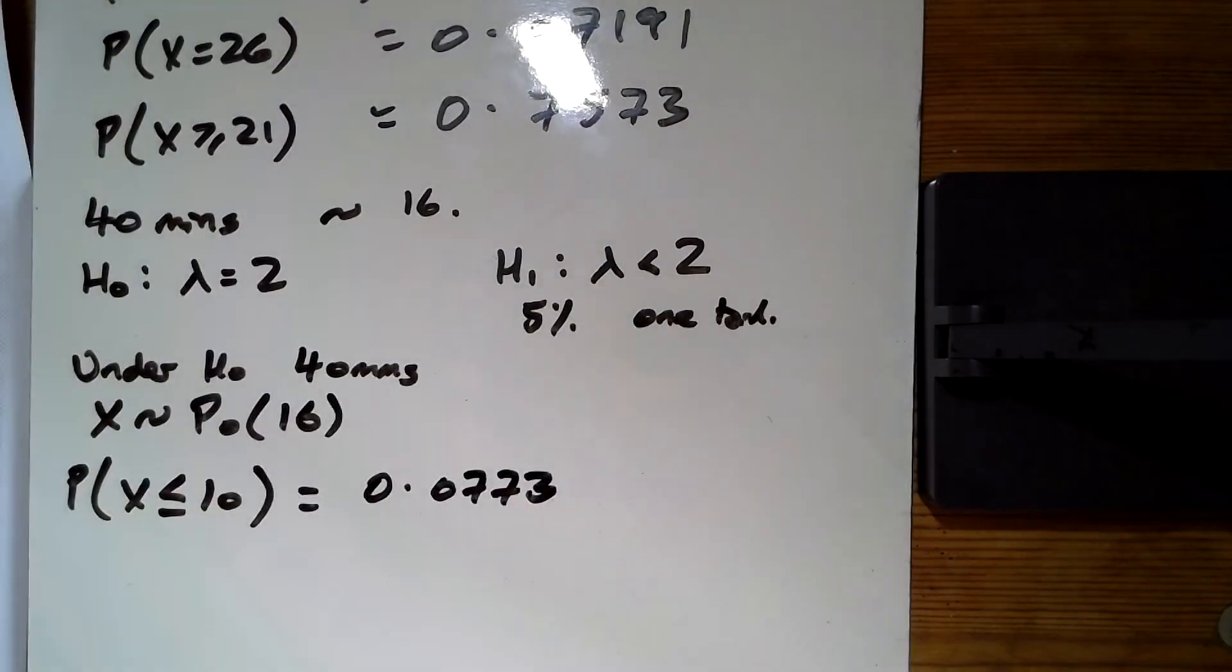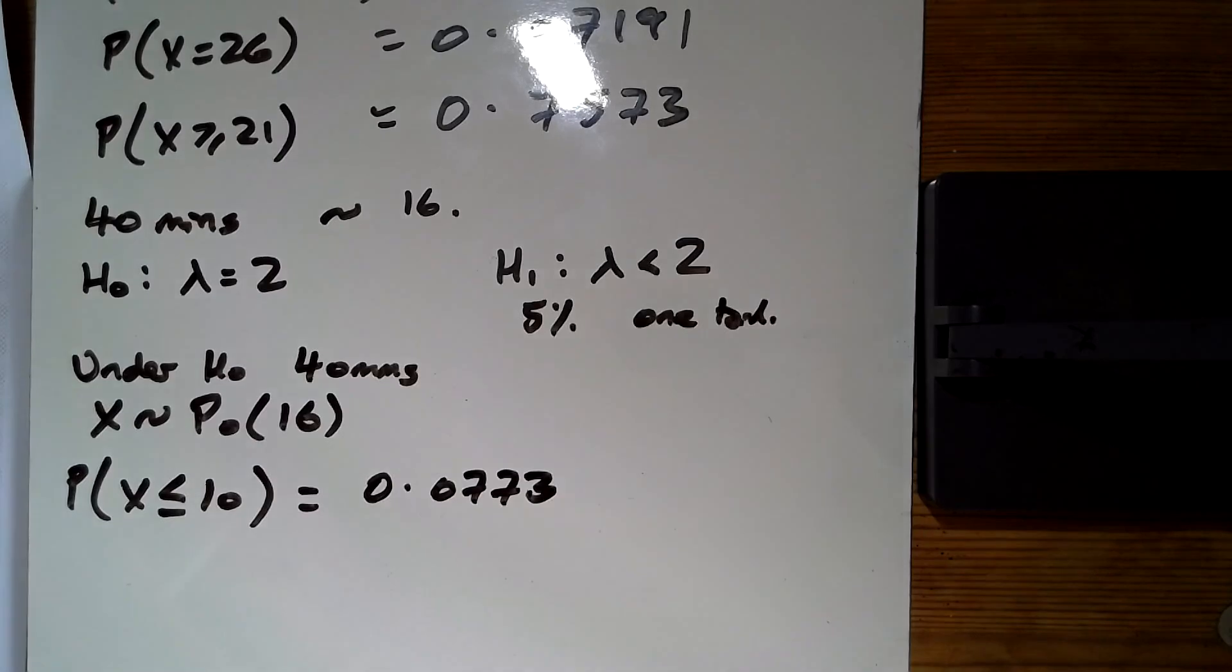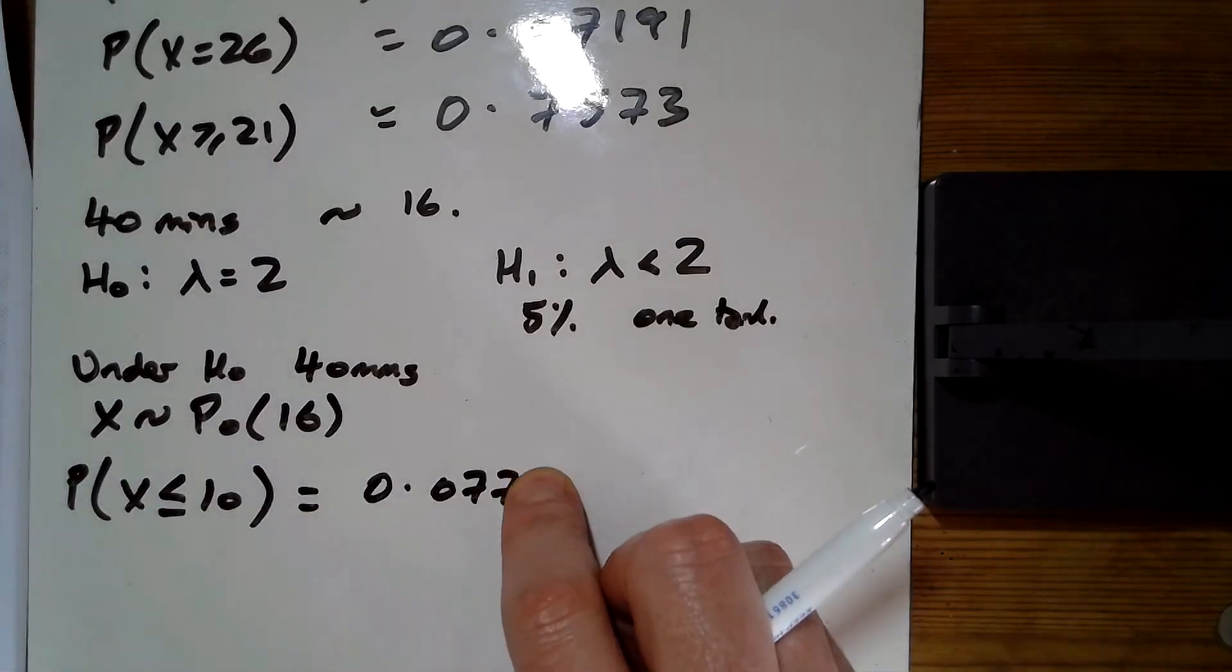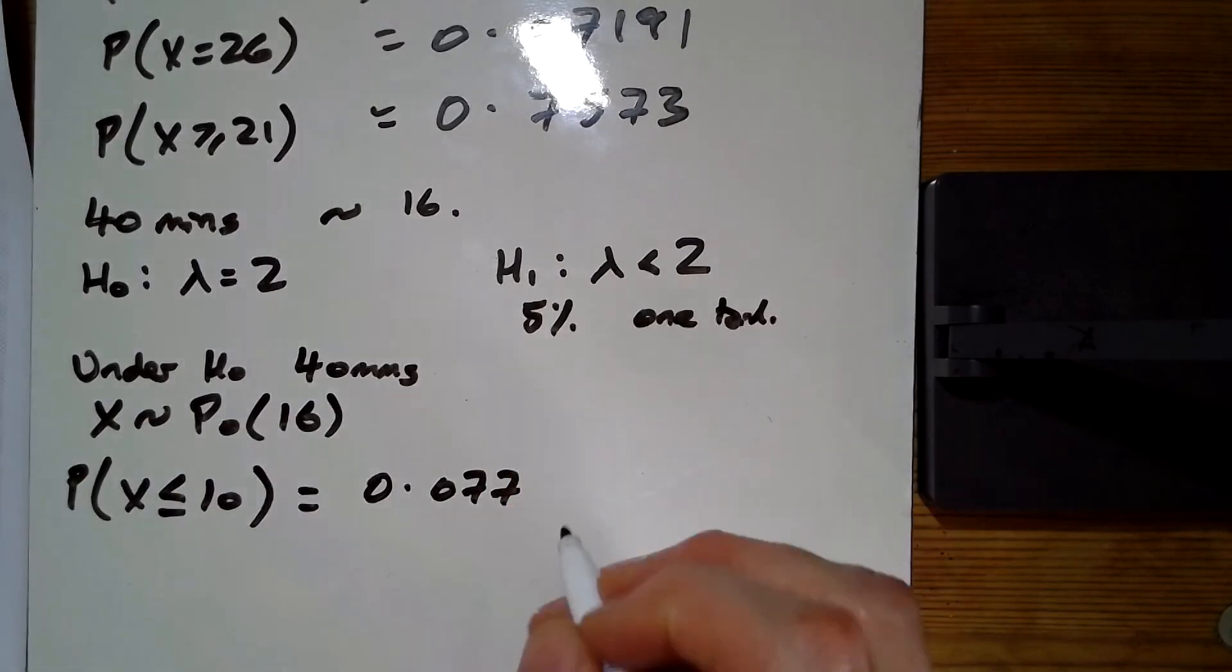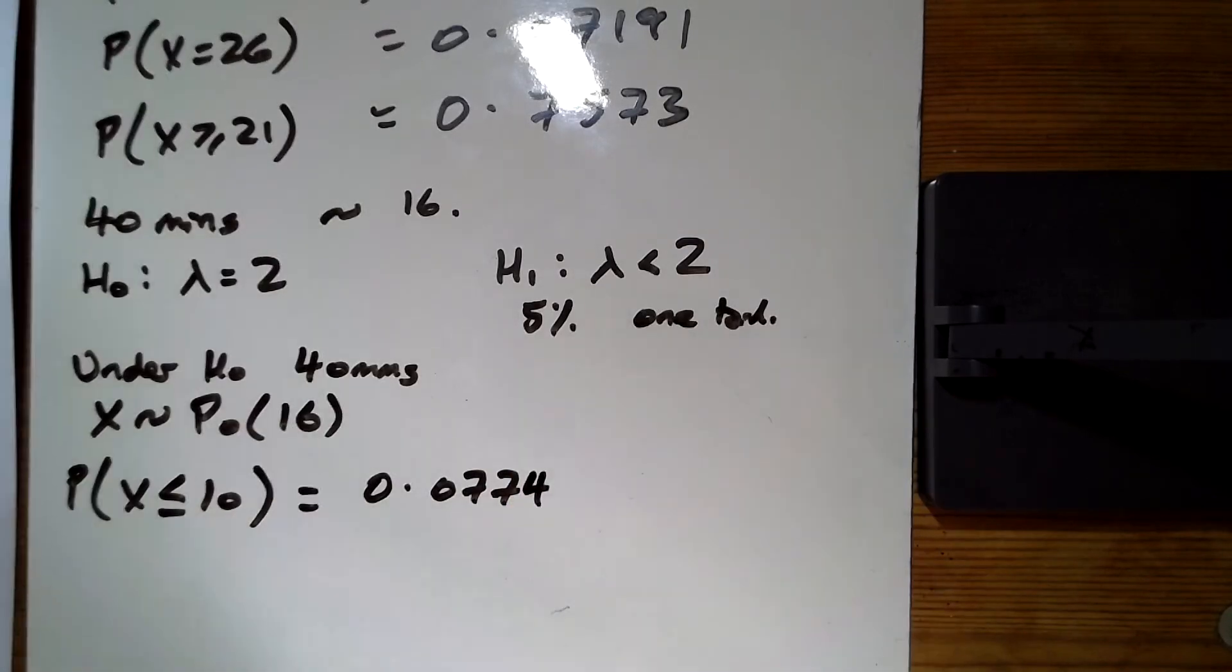0.0773... I'll just check it. Oh, it's 0.07396, so we'll change that to 0.0774. That's too big, isn't it?